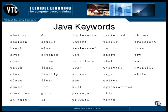The instanceof keyword is also a Boolean operator that returns true or false, depending on whether or not an object is a member of a certain class or implements a certain interface. Remember, if a class implements an interface, all the subclasses inherit that implementation of the same interface.